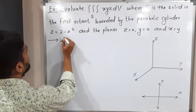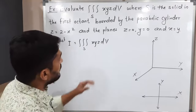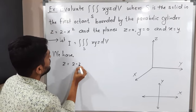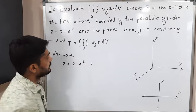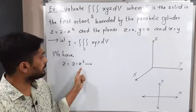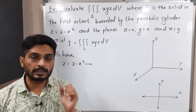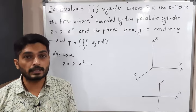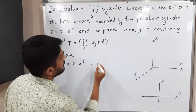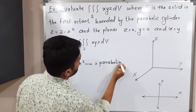Let I be equal to the given triple integration over S of XYZ dV. We have z = 2 − x². In 2D, when we have an equation where the power of one variable is 2 and the power of the second variable is 1, it is 100% a parabola. Here we have two variables with the same powers, so this is also a parabola — but not exactly a parabola. It's a parabolic cylinder. In the example they have also mentioned a parabolic cylinder.